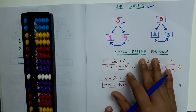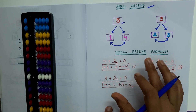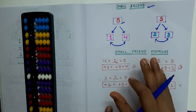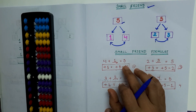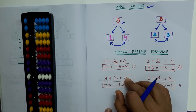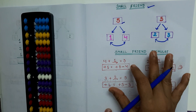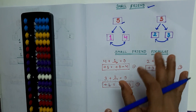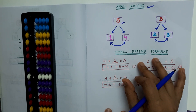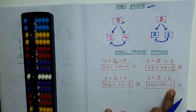So in which case can we apply the small friend formula? If we want to add 1, 2, 3, or 4, but we don't have that number of bits available with us — and with that, we have the upper bits available — in that case, we can use the small friend formula for addition.